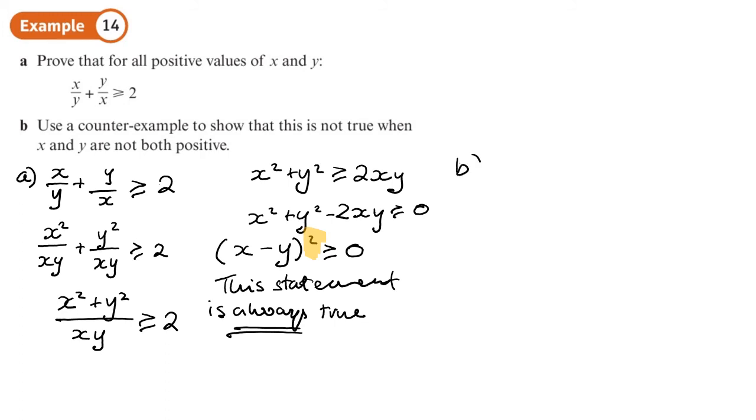And part B, it says use a counterexample to prove that the statement isn't true when X and Y are not both positive. So I'm going to choose, make it easy, I'm going to make X equal to a negative number, negative one, and Y equal to a positive number two, and I'm going to put them in. I'll have negative one over two plus two over negative one.